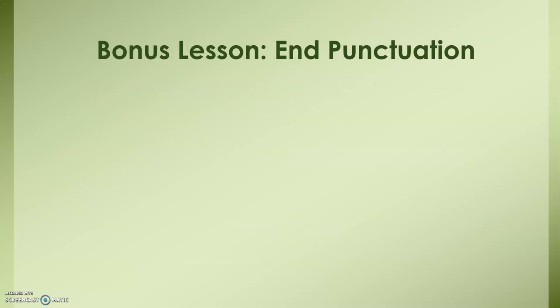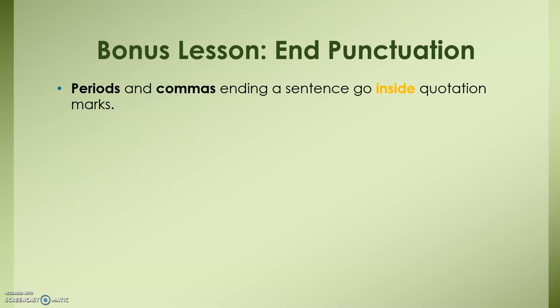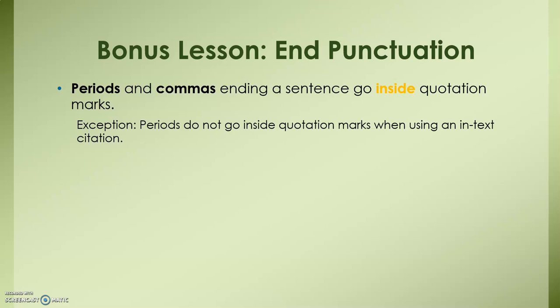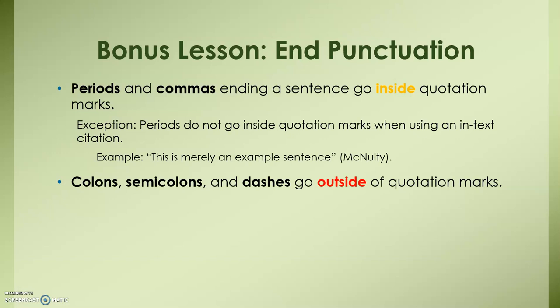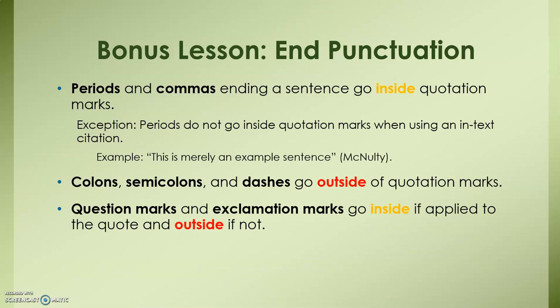Let's look briefly at end punctuation. Periods and commas ending a sentence go inside the quotation mark, with the exception of when you have an in-text citation. So for example, if we were quoting something from a works cited page or a source we had cited, the direct quotation is surrounded by quotation marks, but your period comes after your source. Colons, semicolons, and dashes usually go outside of quotation marks. Question marks and exclamation marks go inside if applied to the quote, and outside if not.